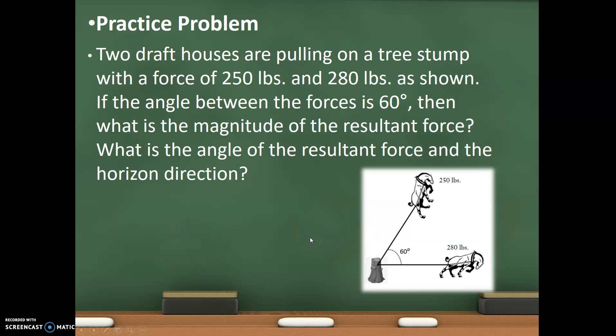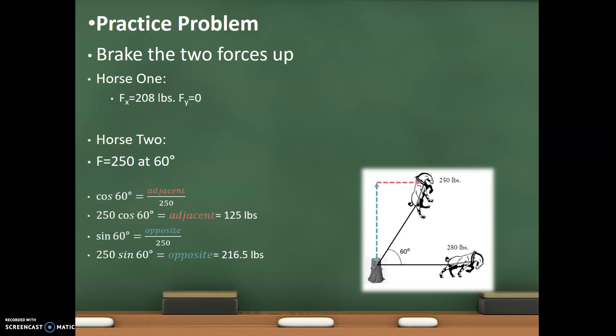So let's go a little bit more complex. Let's have two horses instead of just one person pulling. So you have two draft horses pulling a tree stump with a force of 250 pounds and 280 pounds as shown below. So if the angle between the force is 60 degrees, then what is the magnitude of the resultant force and what is the angle of that force? So we're looking at two different questions. What is the magnitude and then what is the angle? So first thing we need to do is we need to break up our two forces. We have to take horse one and we're going to break that up. Well, horse one is only traveling in the x direction. It's pulling 280 pounds to the right. There is no y component. That makes it really easy.